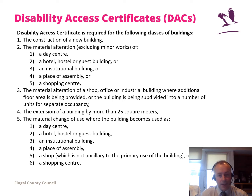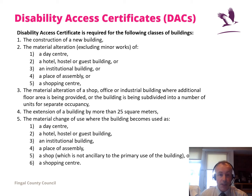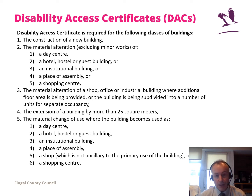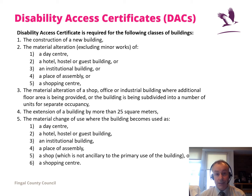Disability Access Certificates (DACs) — all building control authorities are very well aware of these. There was a change in 2018: buildings containing a flat were removed from the list requiring a DAC. From my understanding this relates to bringing back homes, but it does mean that a material operation on a building containing a flat no longer needs a DAC. Similarly for material change of use. To apply for a DAC you need the statutory form via the BCMS online module, drawings showing existing and proposed works, a compliance report, and the fee. Remember: even if you don't need a DAC, every building must comply with Part M regardless.